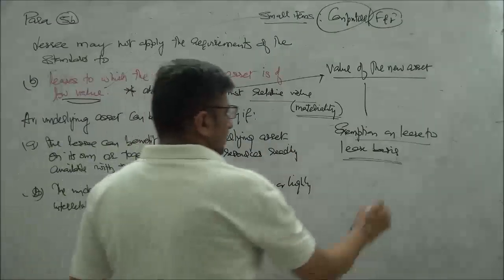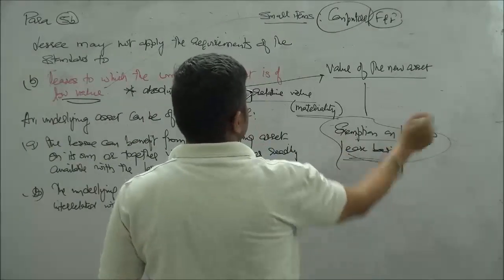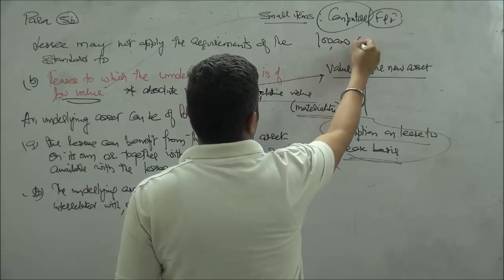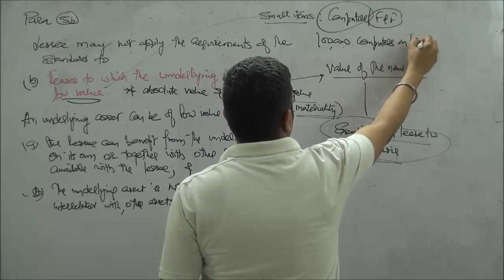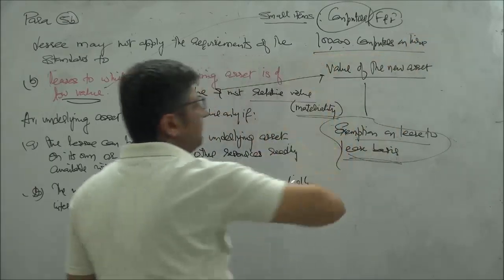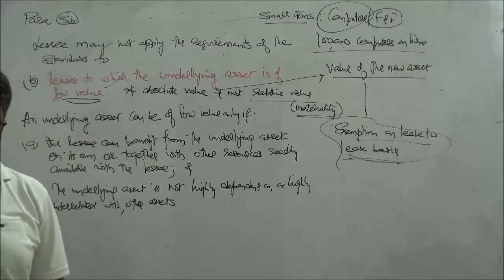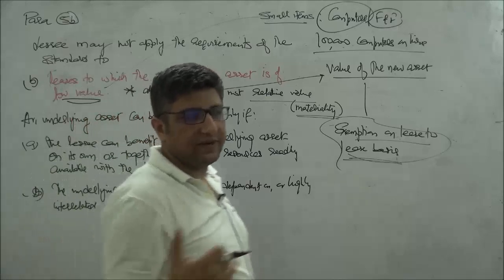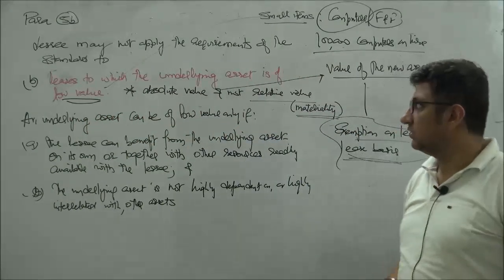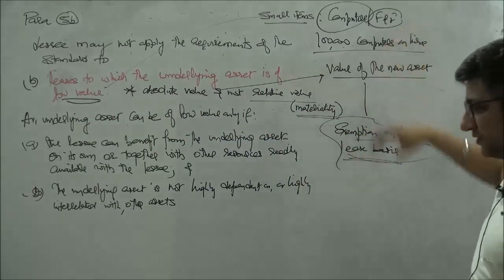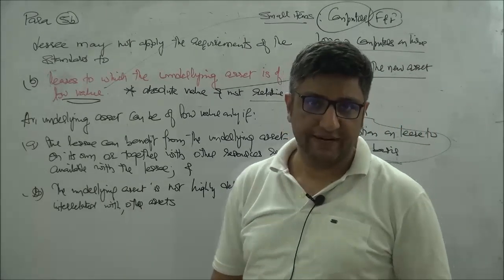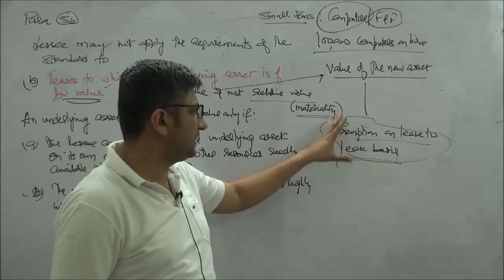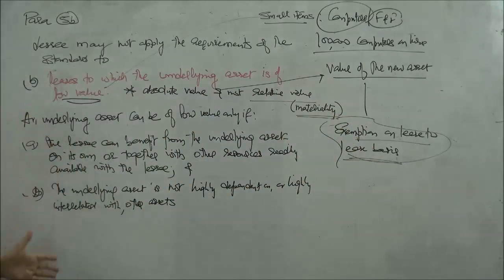So if these small items are taken on lease, then this exemption can be availed. Considering this aspect of lease-to-lease basis, if I'm taking, let's say, 100,000 computers on hire which are independent of each other, it does not matter at all that the total value of these 100,000 computers could be a very high value or a material amount. We look at it from a lease-to-lease perspective.